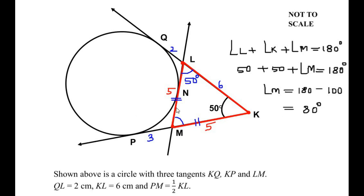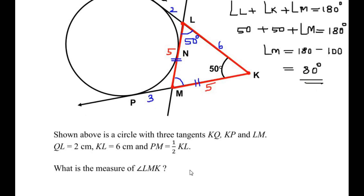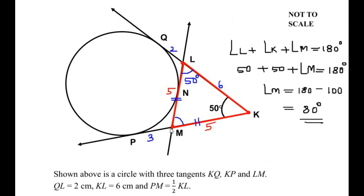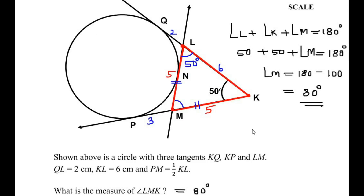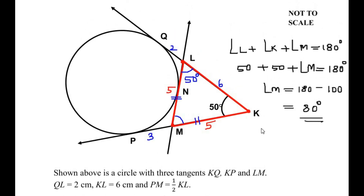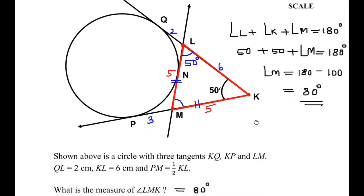So the value of angle LMK is 80 degrees. To find this angle we made use of a single theorem: the length of tangents drawn from an external point to a circle is always equal. I hope you have understood all the steps. If you know any other way of solving this example, do comment below. If you are enjoying my videos, please like, share, and subscribe to my channel. Thank you for watching.